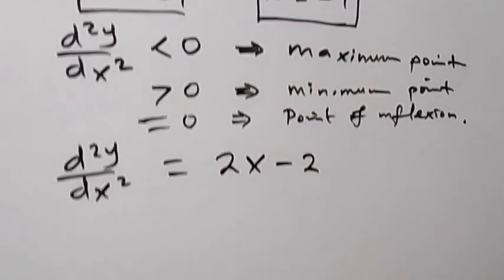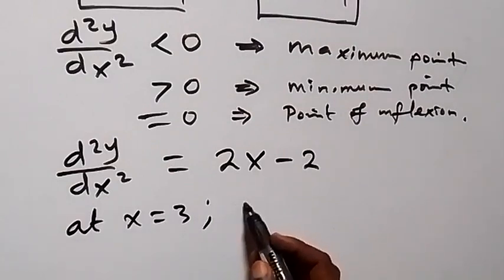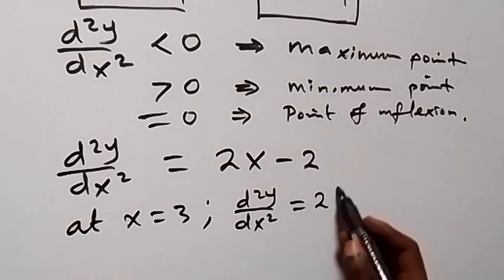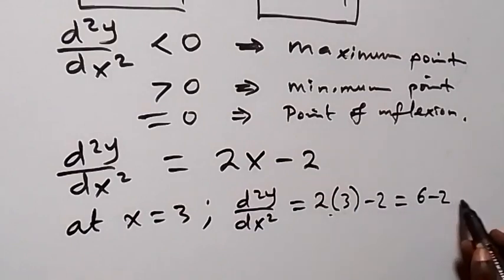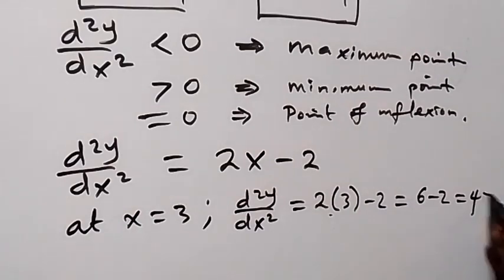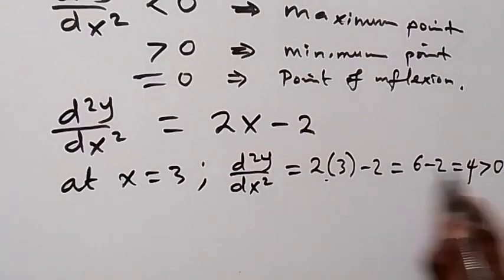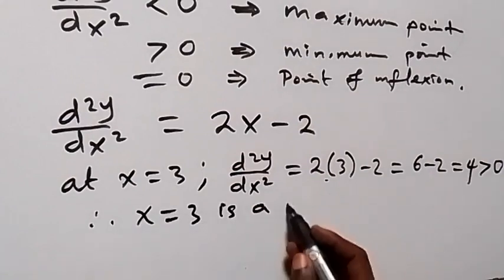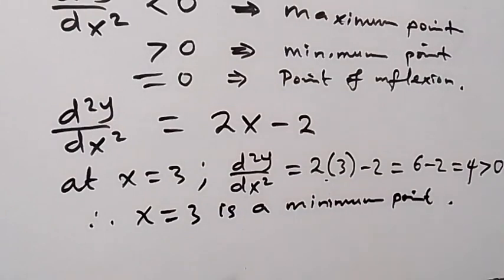At the first turning point, x equals 3, we evaluate d²y/dx²: that is 2 times 3 minus 2, which equals 6 minus 2, which equals 4. Since 4 is greater than zero, the turning point at x equals 3 is a minimum point. We can also find the minimum value by substituting x equals 3 into the original function.